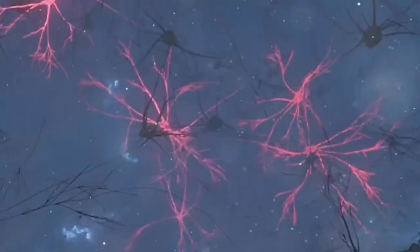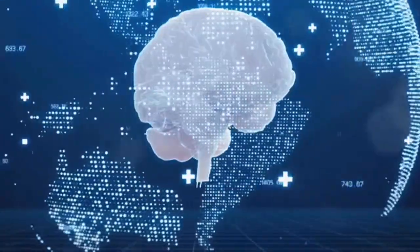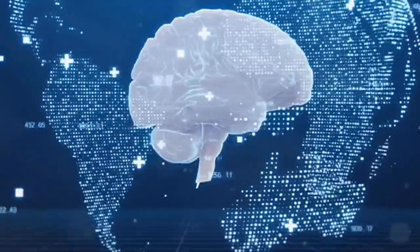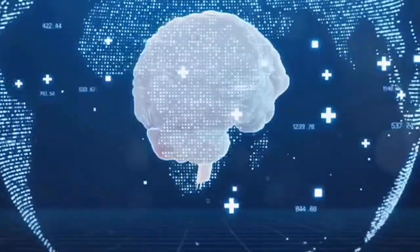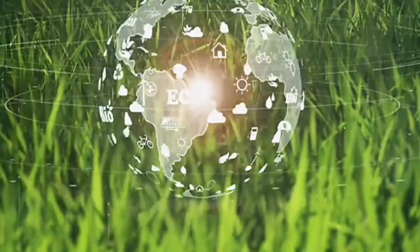Consider the similarities between a neuron and a galaxy. Both are interconnected nodes within a vast network. Both transmit information through complex signals. Could it be that the universe is organized according to similar principles, just on a much larger scale? This idea, known as the holographic principle, suggests that the universe is a hologram.